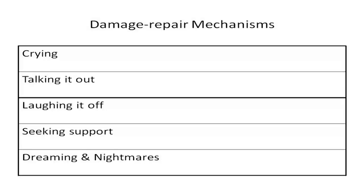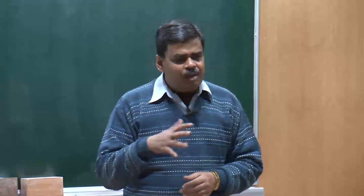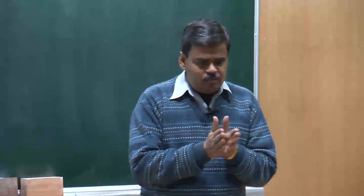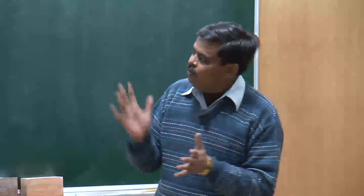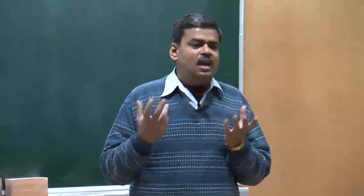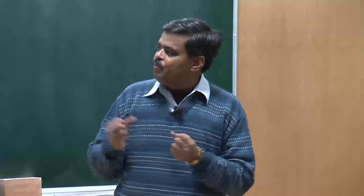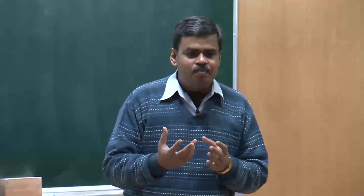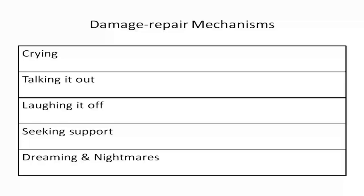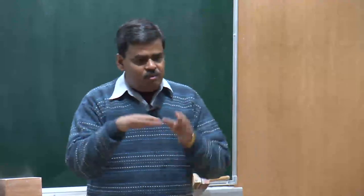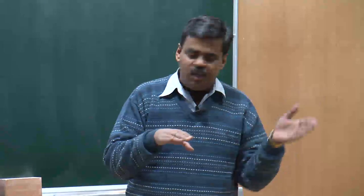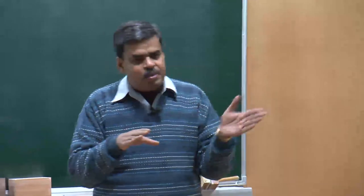The first damage repair mechanism is crying. Crying can be looked at from more than one perspective. One is that there is a state of sadness — sadness is one of the basic emotions — and crying is triggered by that state of sadness.